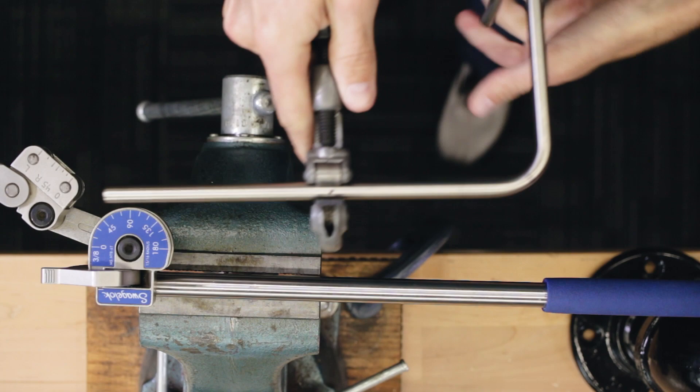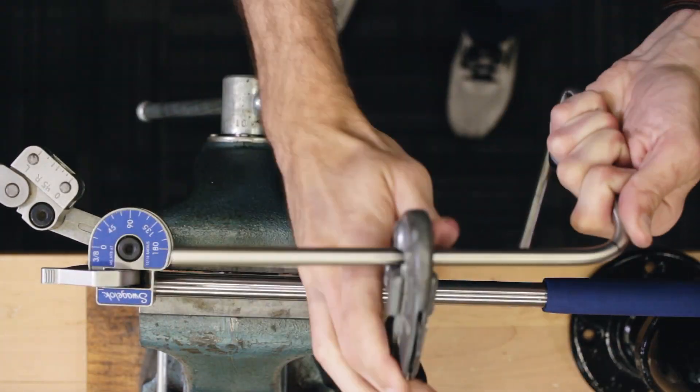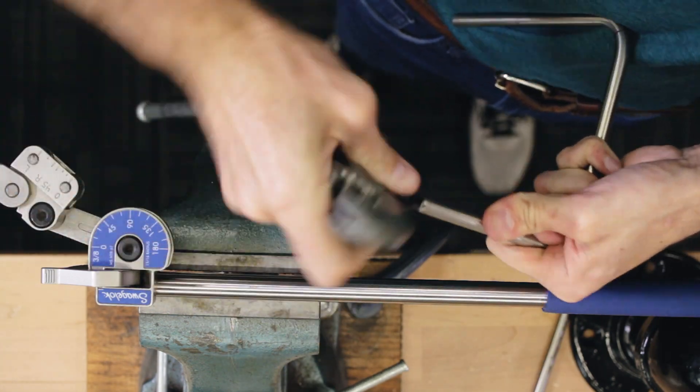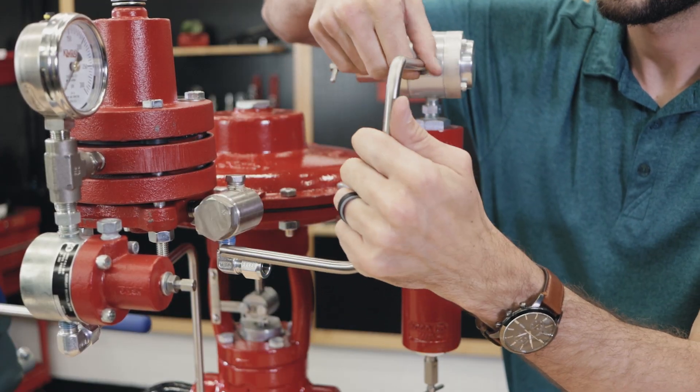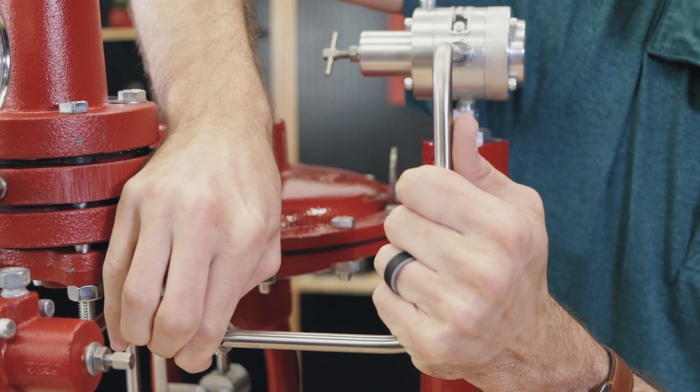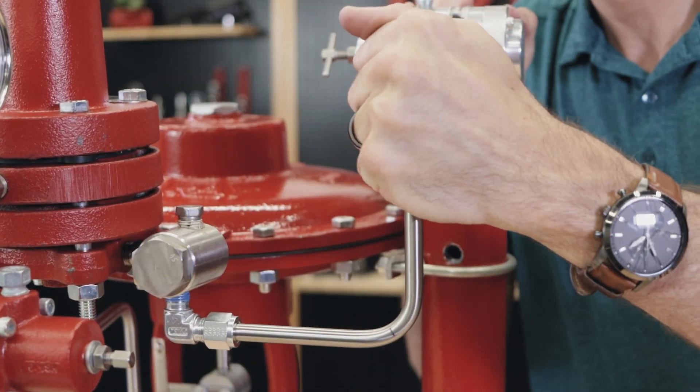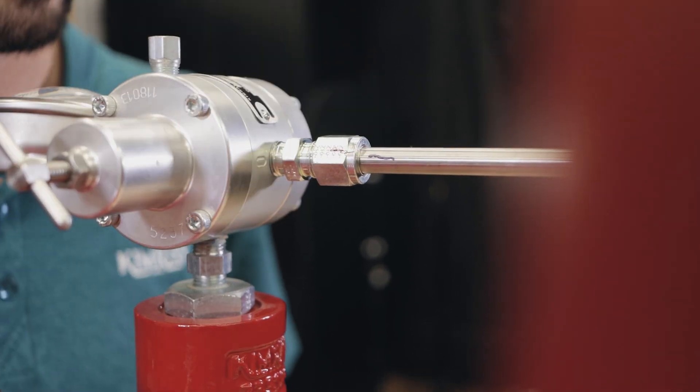Make your cut. Again tighten after every second rotation. Deburr the end and you're ready to install. Hand tighten the fittings. Mark a reference point and turn one to one and a quarter turns.